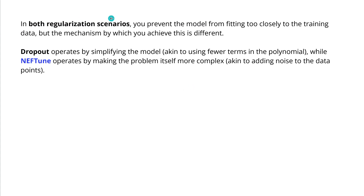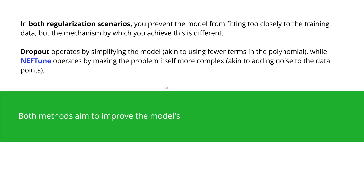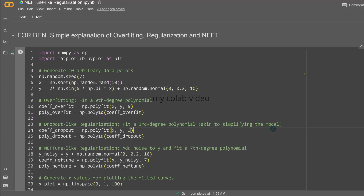In both regularization scenarios you prevent the model from overfitting to the training data, but the way this is achieved is different. Dropout operates by simplifying the model — using fewer terms in the polynomial, crossing out some neurons — whereas NEFT operates by making the problem itself more complex, adding stochastic noise to the data points. Both aim to improve the model's ability to generalize to new unseen data.